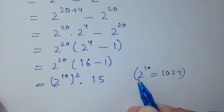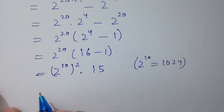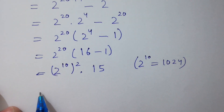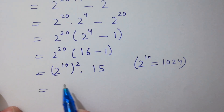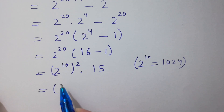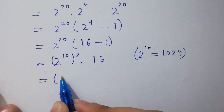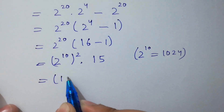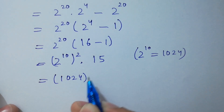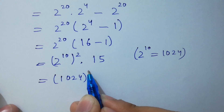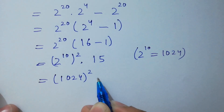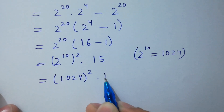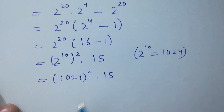So here, 2 to the power 10 is 1024, giving us 1024 to the power 2, times 15.